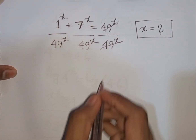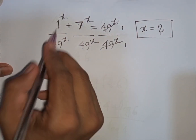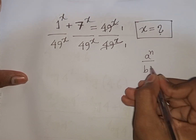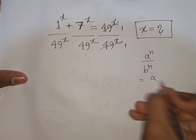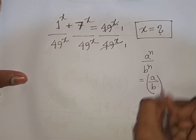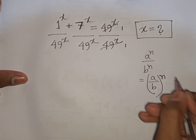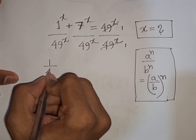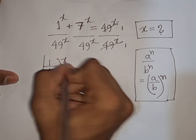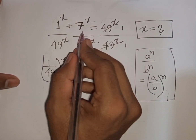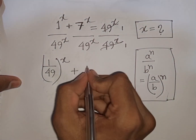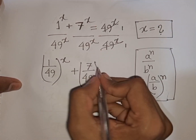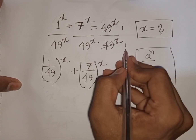Now the 49^x terms cancel. We have the same power x but different bases. Remember this exponential rule: a^n over b^n equals (a/b)^n. According to this rule we can write (1/49)^x plus — again same power x but different base — (7/49)^x equals 1.